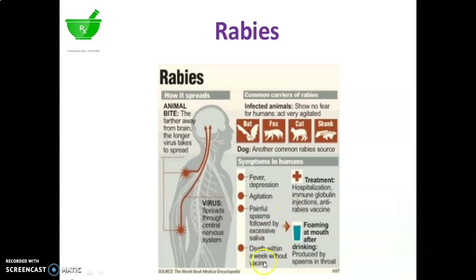If anyone is not treated with the vaccine, that person may die within one week. Treatment is hospitalization, immune globulin injections, and anti-Rabies vaccine. Foaming at the mouth after drinking is produced by spasms in the throat.